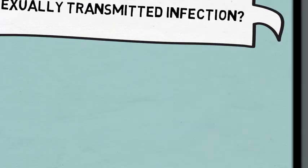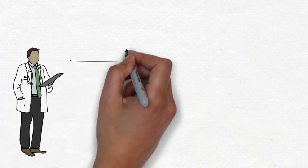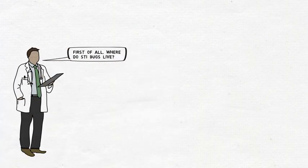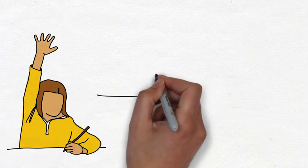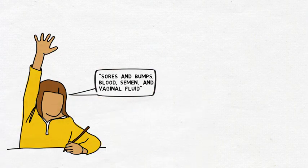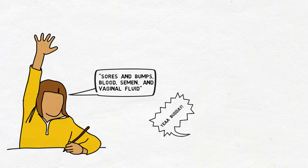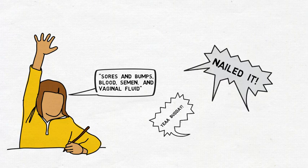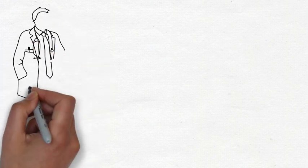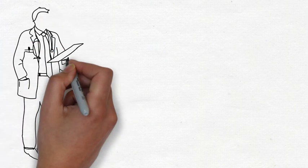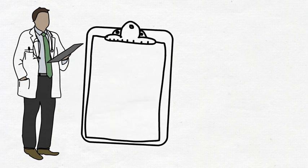How are STIs transmitted? To answer this, we must first talk about where these germs live in the body. They can be found in open wounds such as cuts and scrapes, in blood, and in semen and vaginal fluids. STIs can pass from one person to another through any kind of sexual activity and even through some non-sexual but intimate actions.